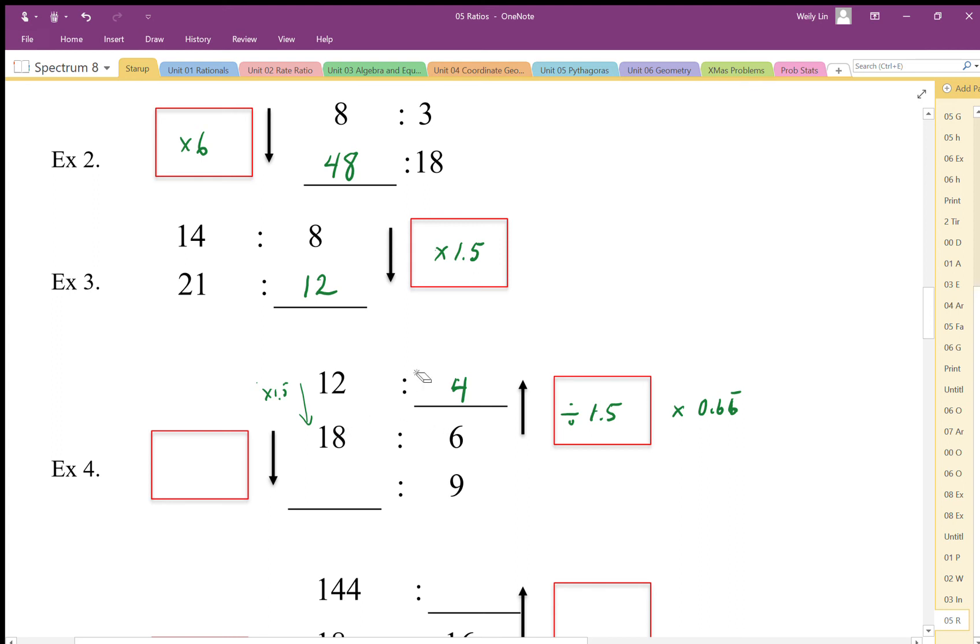Going from middle to bottom, 9 divided by 6 is 1.5. It's going in the right direction so I'm going to times, so I'm going to end up with 27.